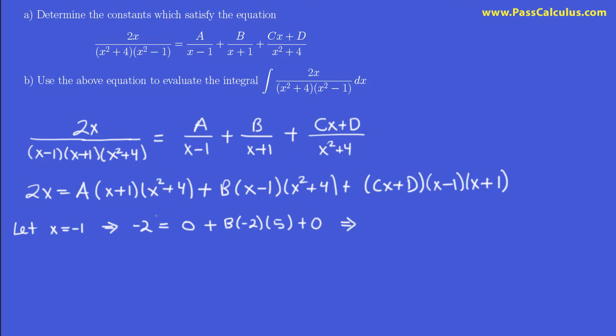Now, these negative 2's go away, so really I have 1 equals 5b, so b is 1 fifth. Great.